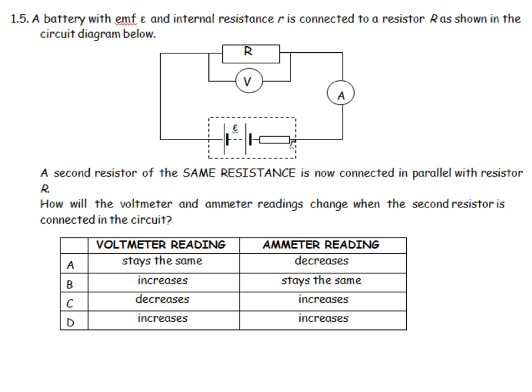A battery with an EMF and an internal resistance is connected to a resistor as shown. A second resistor with the same resistance is now connected in parallel with resistor R. That will decrease the resistance overall of the circuit. How will the voltmeter and the ammeter readings change?